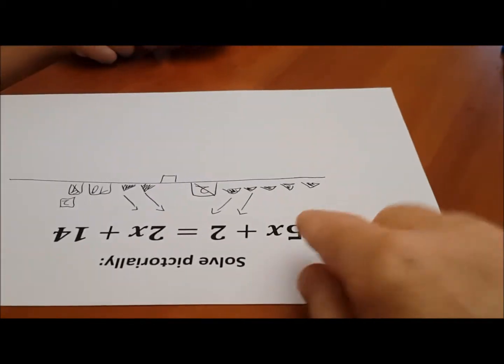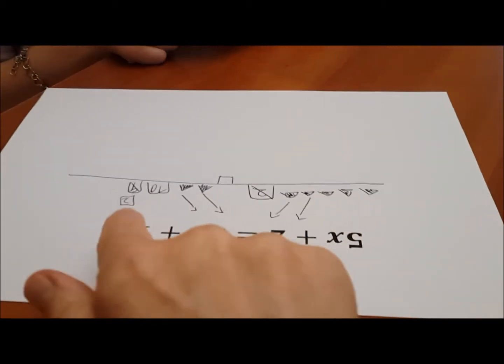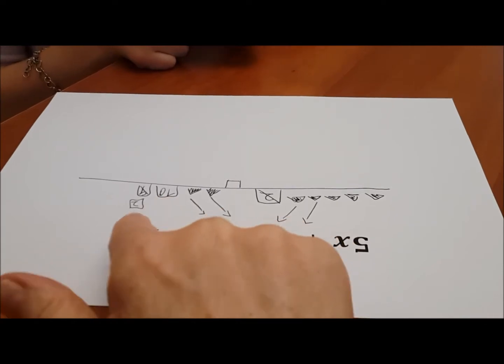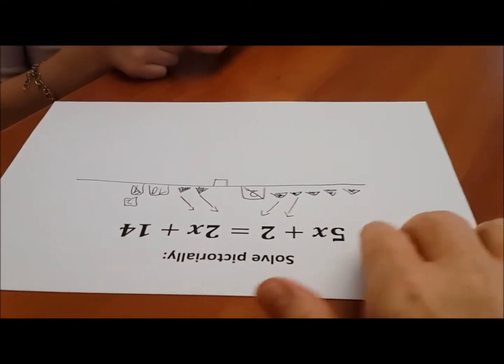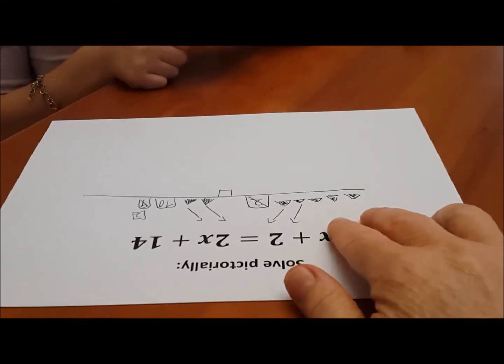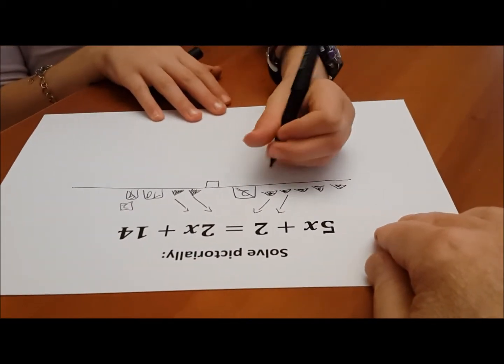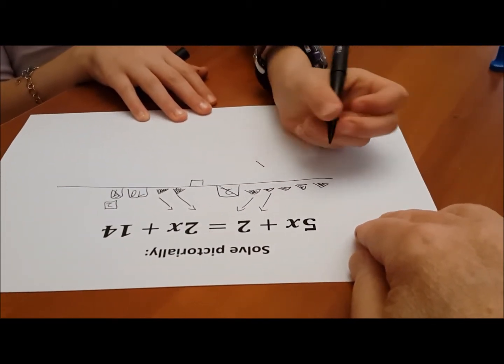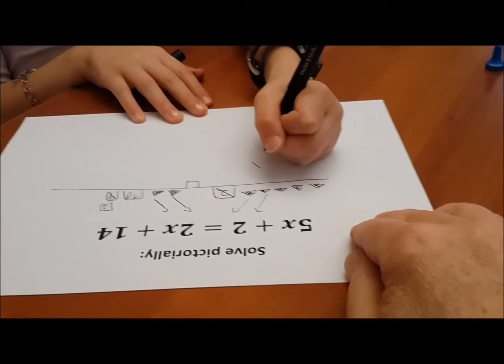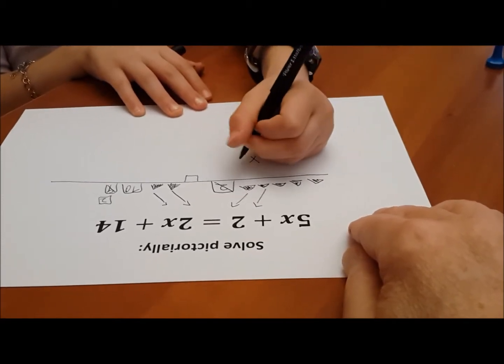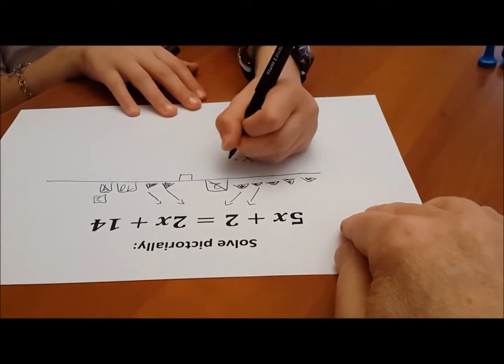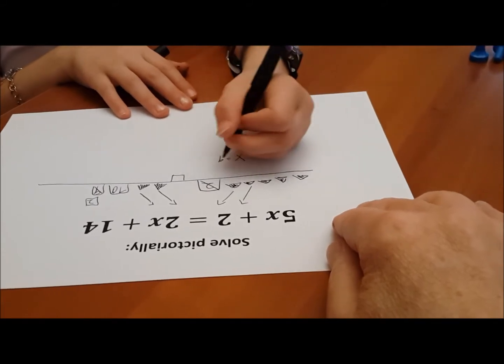So now on this side we're left with 3 pawns. And on this side we're left with what? A 12. So how much is each pawn? 4. Please write down over here pawn equals 4. X. X equals 4. That's good. You could write x equals 4.